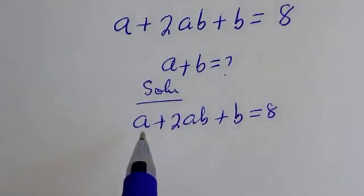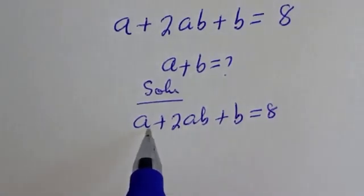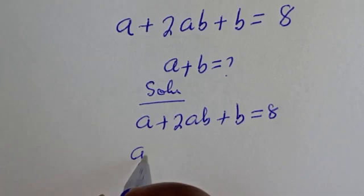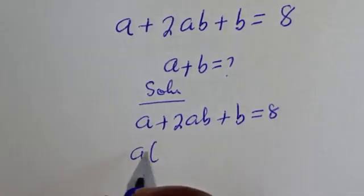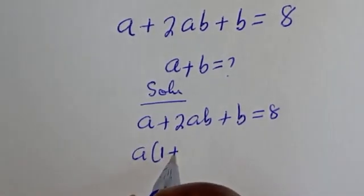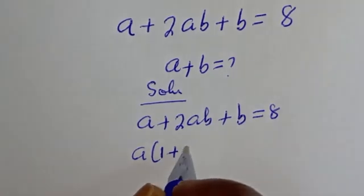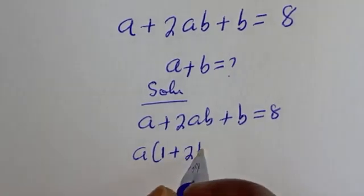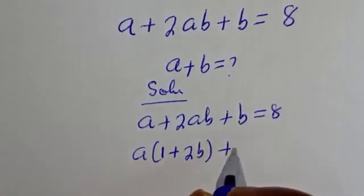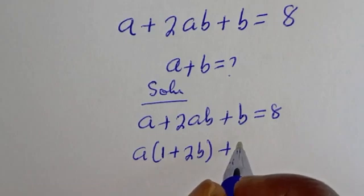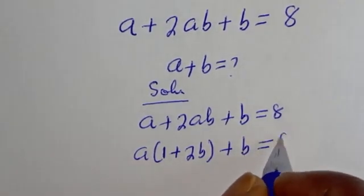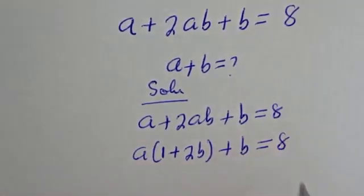Then if you look at these two terms, A is common. Let's bring it out. Note: A bracket, this divided by this, 1 plus this divided by this, 2B plus B is equal to 8.